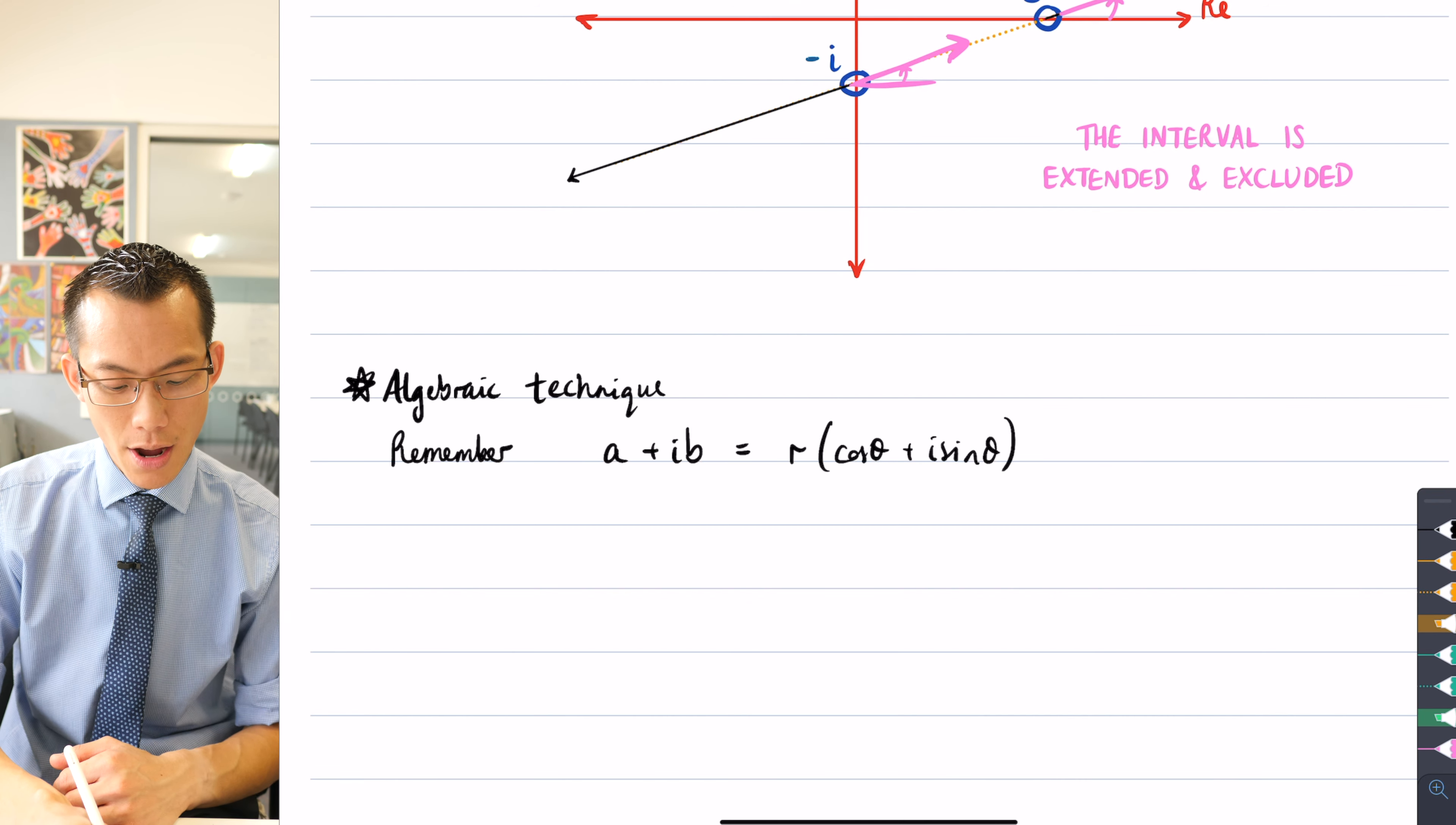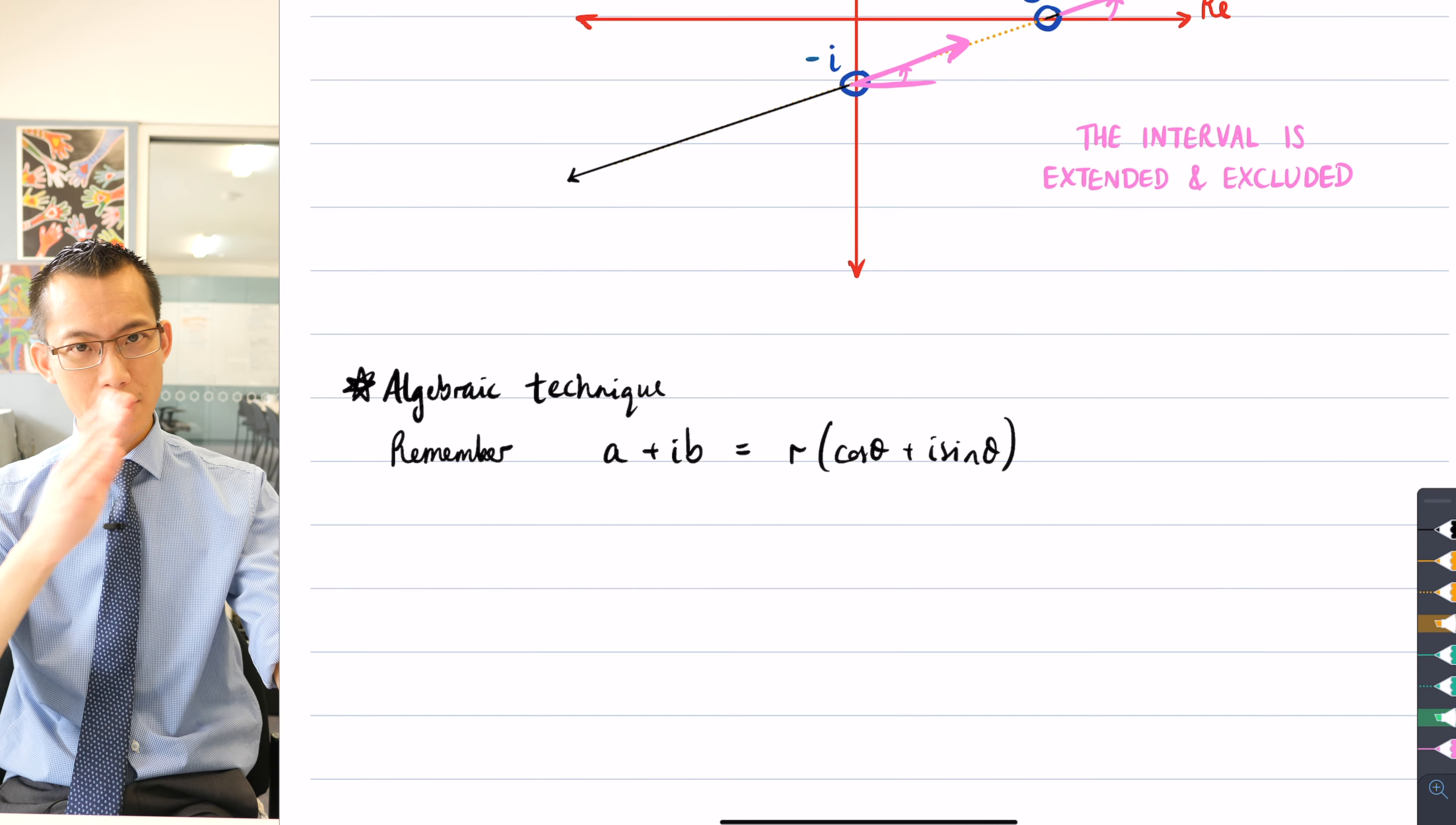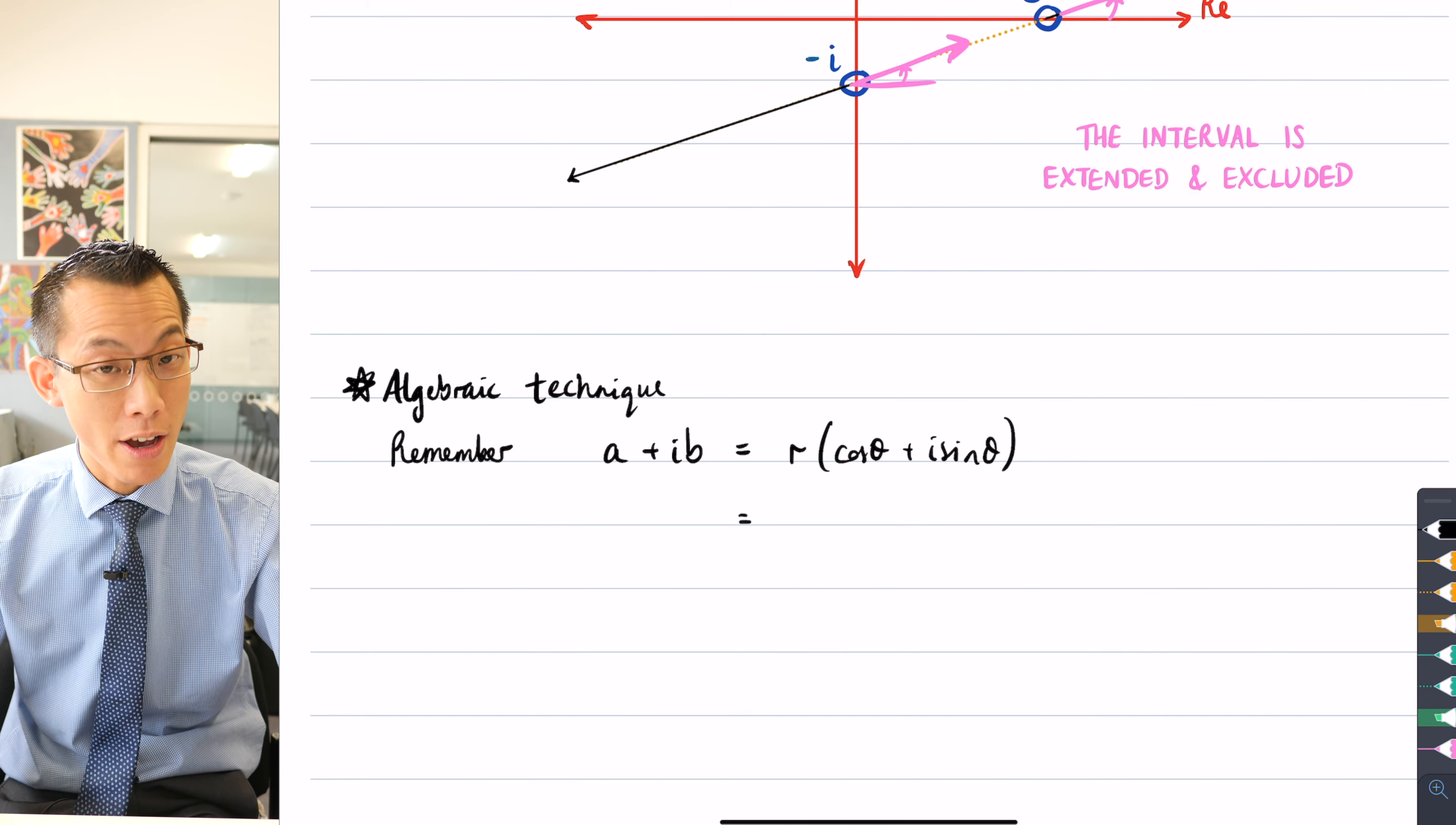So instead of a horizontal and a vertical component like you have in Cartesian form, we've got our modulus here and we've got our argument in here. So long as you know what direction you're facing and how far you go in that direction, that uniquely defines a complex number on the complex plane. So this is foundational. How do I get this to help me?